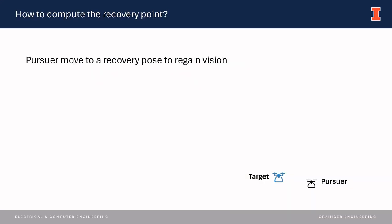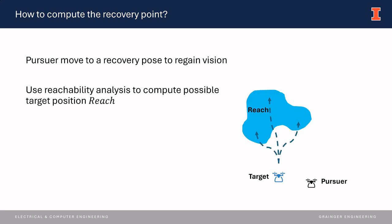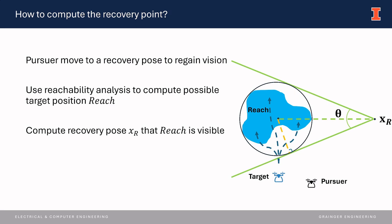The recovery maneuver is achieved by moving the pursuer to a recovery pose, and it involves three steps. First, the controller uses reachability analysis to predict a set of positions where the target could possibly be located from its last seen position. Then, it computes the recovery pose where the whole reachable set is visible.